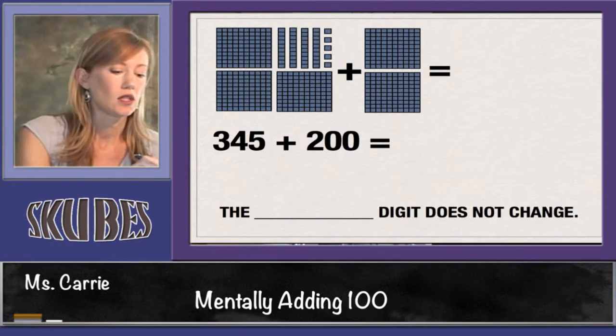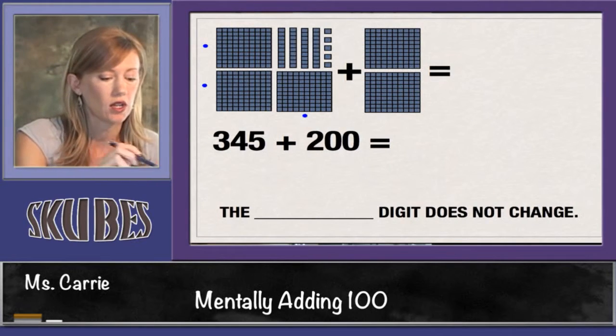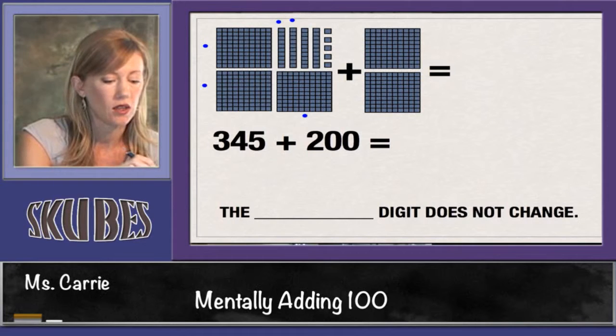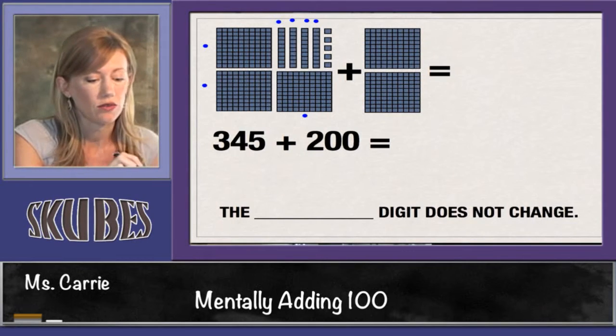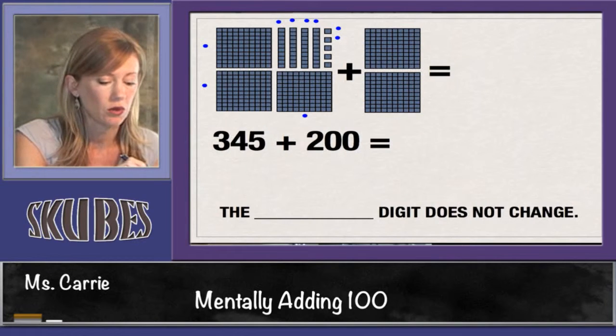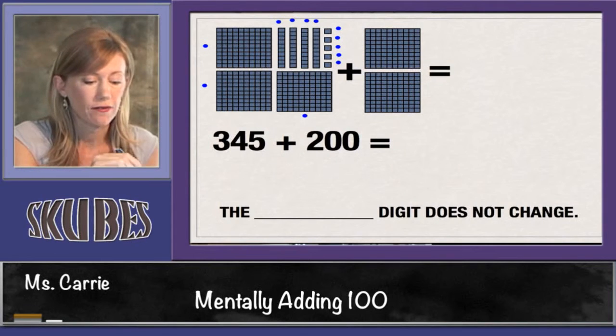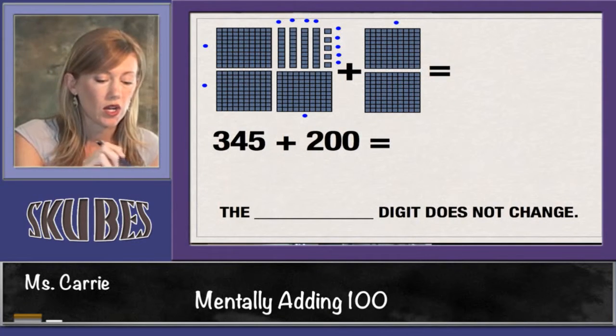This one is 100, 200, 300, 310, 320, 330, 340, 341, 342, 343, 344, 345 plus 100, 200.